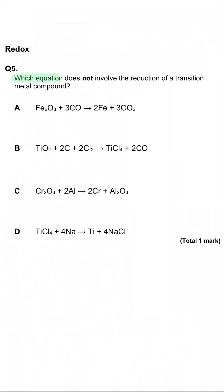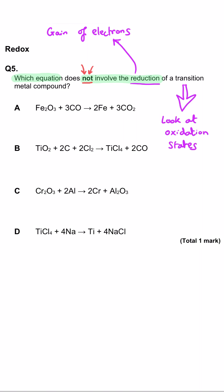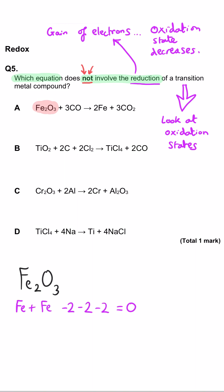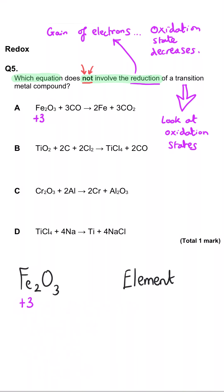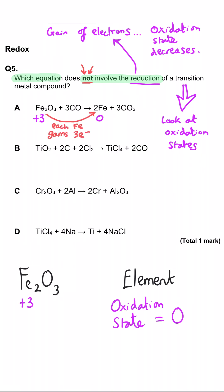Which equation does not involve the reduction of a transition metal compound? We need to work out the oxidation state of the transition metal at the beginning and end, and see if it has gone down. In iron oxide Fe2O3, three lots of oxygen at minus 2 means two iron ions must be plus 3 to give zero overall. At the end we have the element, so that is zero — this is reduction, with 3 electrons gained.